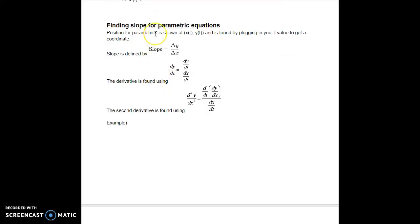Start finding slope for parametric equations. So slope for any equation is defined as the change in y divided by the change in x. It's the same for parametrics, but parametrics have two equations. They have a separate equation for your y values and your x values. So you have to do basically your y of t equation over your x of t equation.